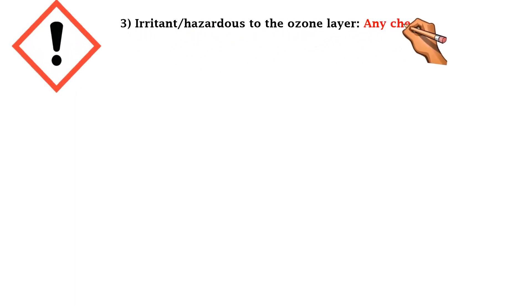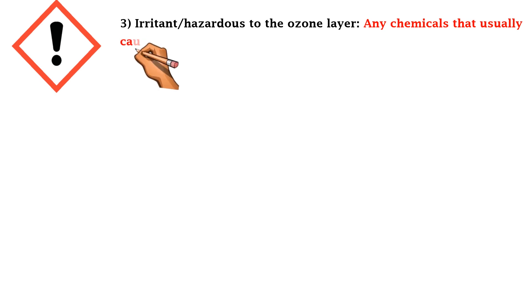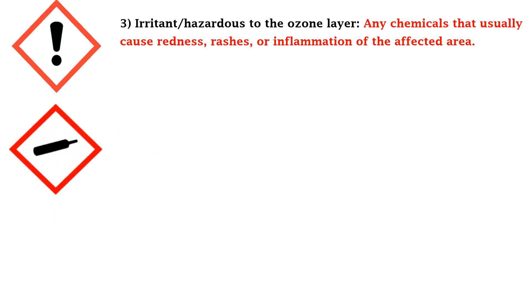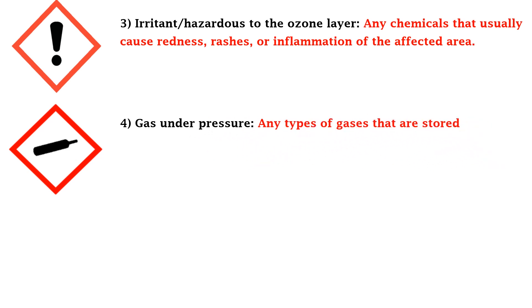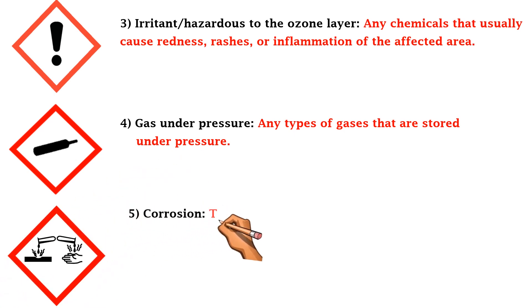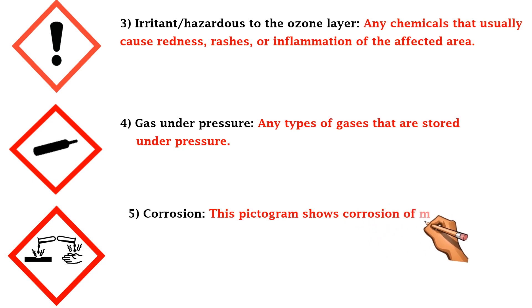The third type is hazardous to the ozone layer — chemicals that usually cause redness, rash, or inflammation of the affected area. The fourth type is gas under pressure — any type of gas that is stored under pressure, which is also another type of chemical hazard.